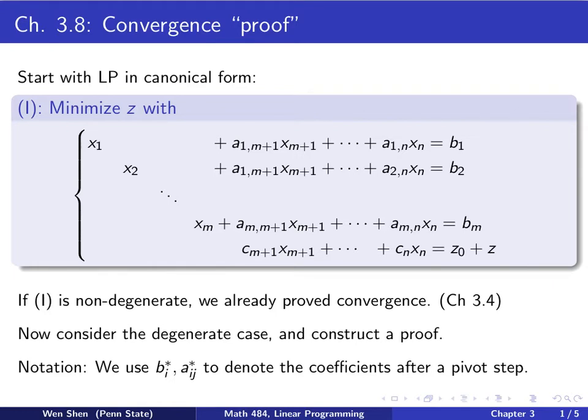Before we get into the proof, let me explain some notations we'll be using throughout. We use bi, j, and ai, j, without the star sign to be the coefficient before we perform a pivot step. And then, after pivot step, they might change, and the new ones, we put a star there. So the star means after a pivot step.